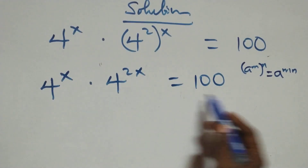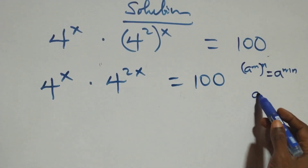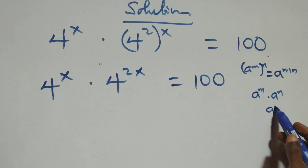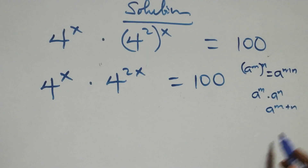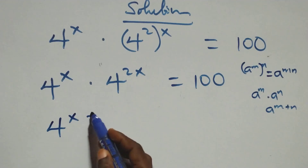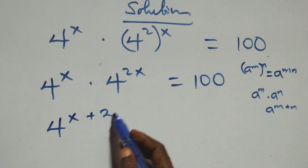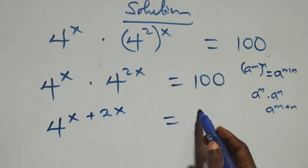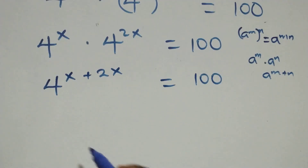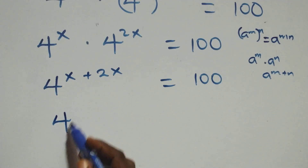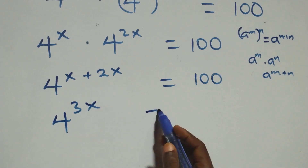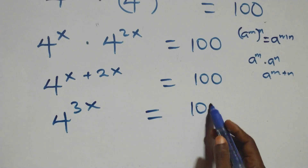This follows when we have a raised to power n times a raised to power m — the same thing as a raised to power n plus m. So here we have 4 raised to power x plus 2x equals to 100 on this side.